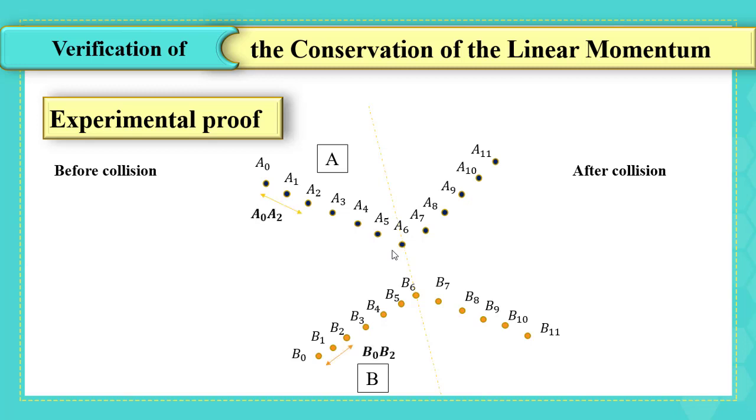The speed of each puck is determined graphically using the methods of grade 10. We used to divide the average distance between A0, A2 by 2 tau, or even better than this, we divided the total distance A0, A6 by 6 tau to reduce the possible error in measurements. Anyways, the speed of A before collision will be constant, and the speed of B before collision will be constant too.